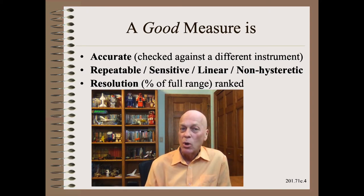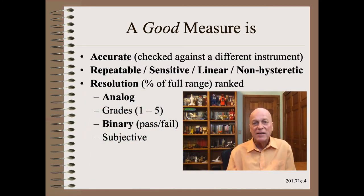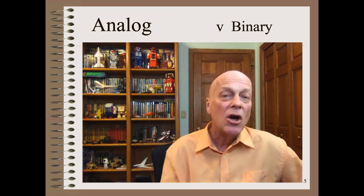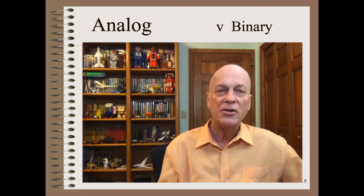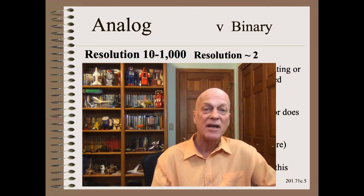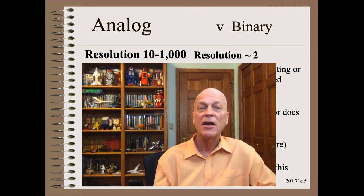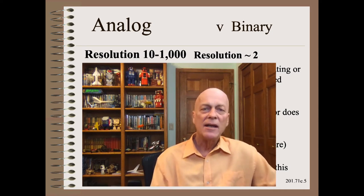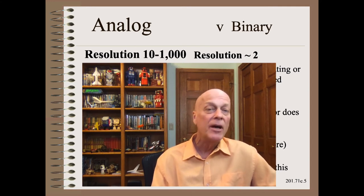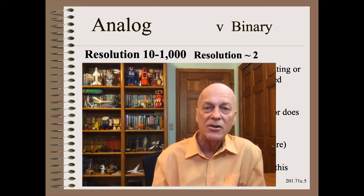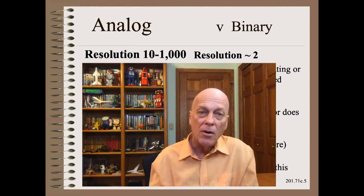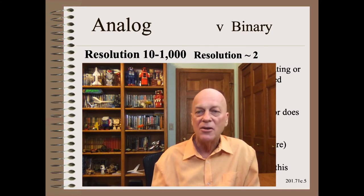Ranked in order of best to worst: analog is better than grading, which is better than binary, which is better than subjective measures. Why are analog measurements so much better than binary measurements? Simple. Analog measurements can have orders of magnitude better resolution, meaning you could do fewer trials, fewer measurements, and get statistically better conclusions. Let's give a few examples illustrating how many binary measurements can quite easily be turned into far superior analog measurements, often with only a little more effort — improving on the traditional go/no-go, pass/fail metrics that have a resolution of only two.